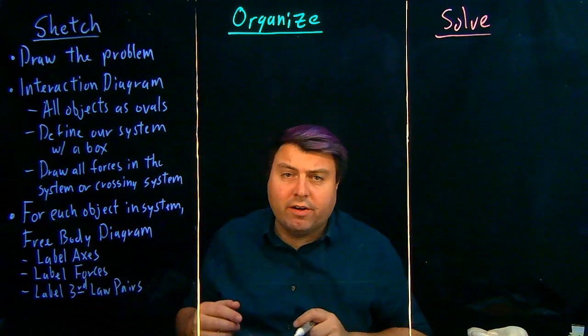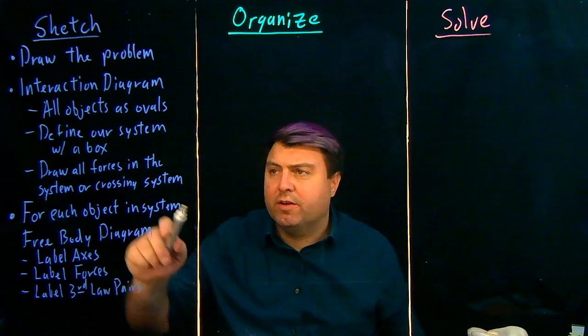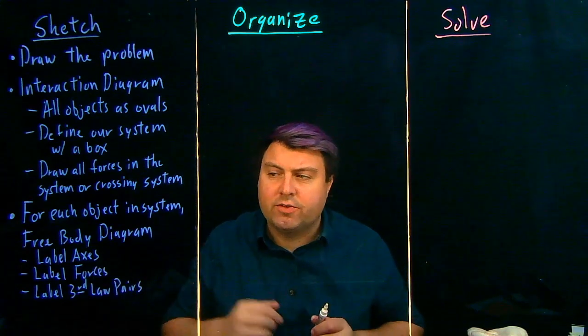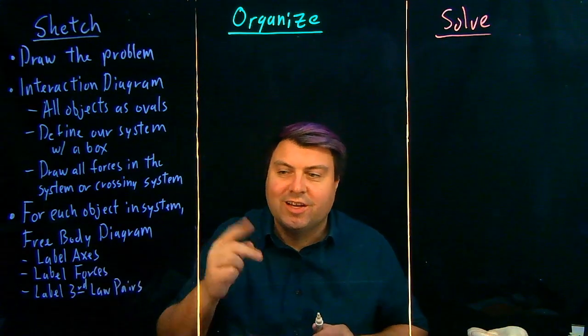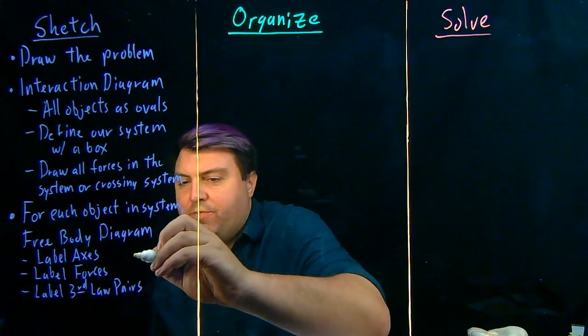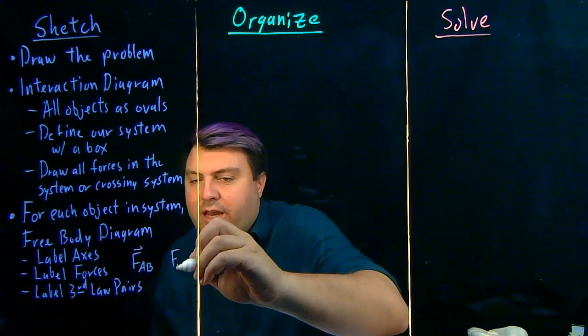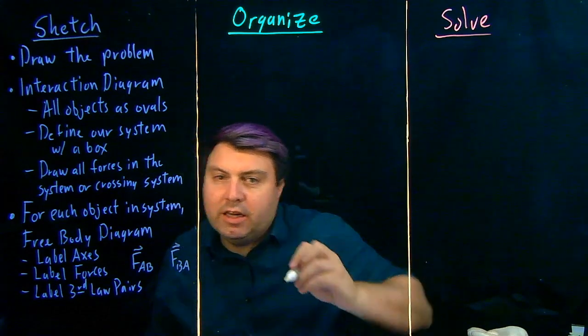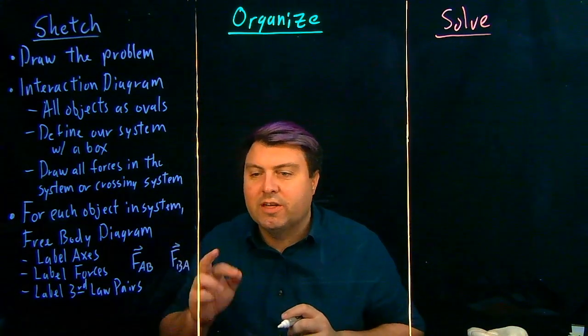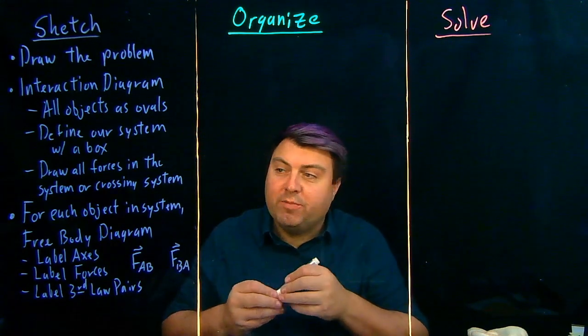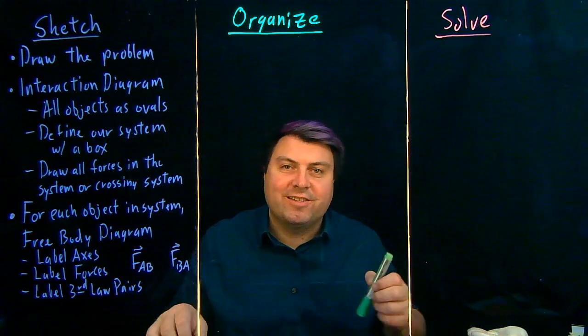We're going to use our interaction diagram to find the third law pairs. Any forces that are entirely within the system are third law pairs. We can also use our labels if we write an FAB and an FBA. Any time we can switch the two subscripts on a force, that means it's a third law pair.